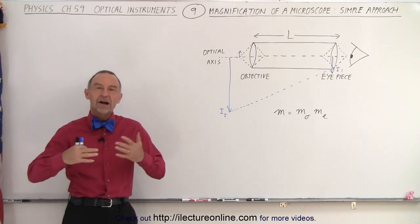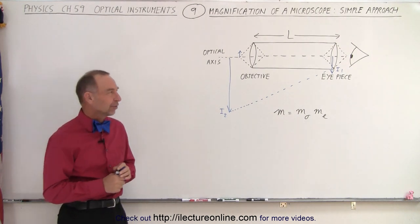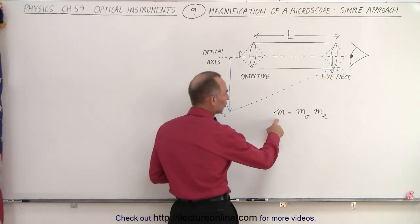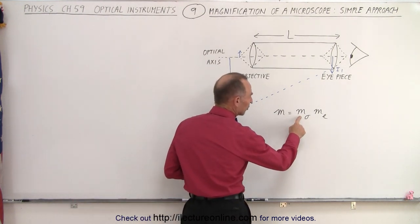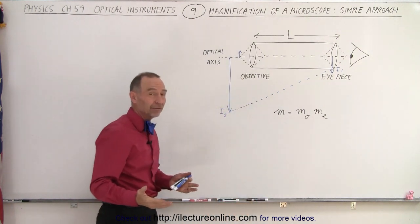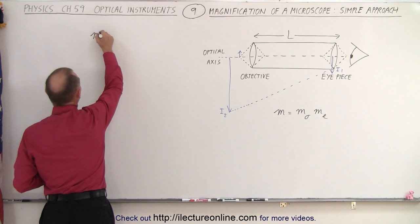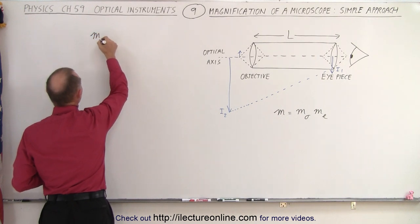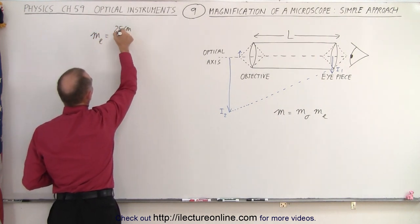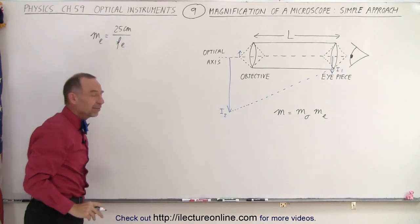If you just want to get an approximate answer for the magnification of a microscope, this is how you do it. The magnification is going to be the product of the magnification of the objective times the magnification of the eyepiece. For the eyepiece, we use a simplistic approach for relaxed viewing, and the magnification is 25 centimeters divided by the focal length of the eyepiece.